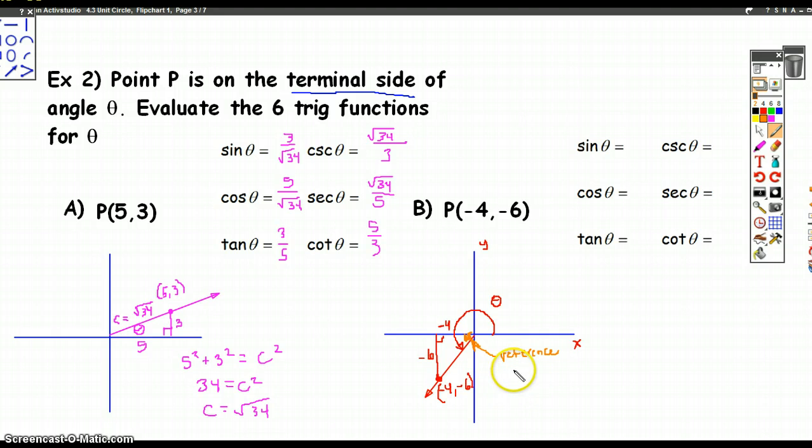Otherwise, our trig definitions, opposite over hypotenuse, etc., doesn't make sense. So that is the reference angle. The reference angle is the angle made with the X-axis. Okay, so tangent is therefore opposite over adjacent, negative 6 over negative 4. But that, of course, is a negative divided by negative. Those are just positive. So 6 over 4. Cotangent is 4 over 6.